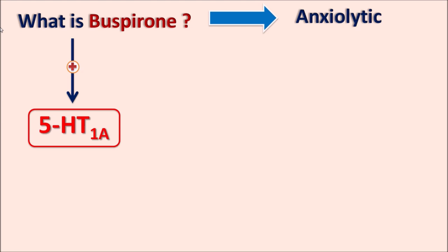Apart from its action on 5HT1A receptors, buspirone also shows some activity on dopamine receptors. It blocks D2 receptors, similar to other antipsychotics, which may also be responsible for a few of its pharmacological actions.